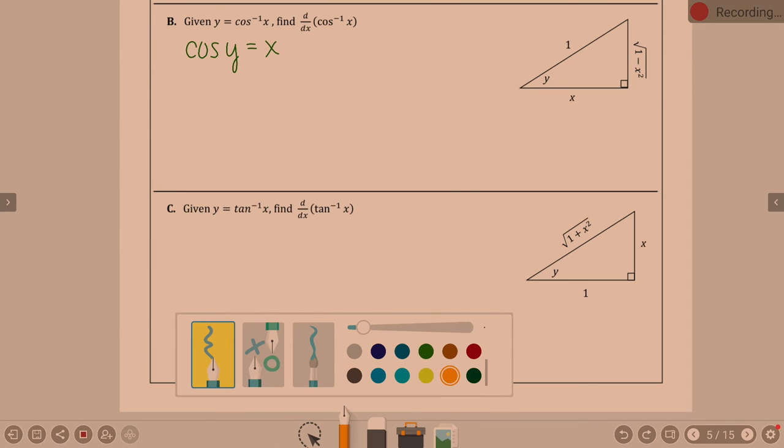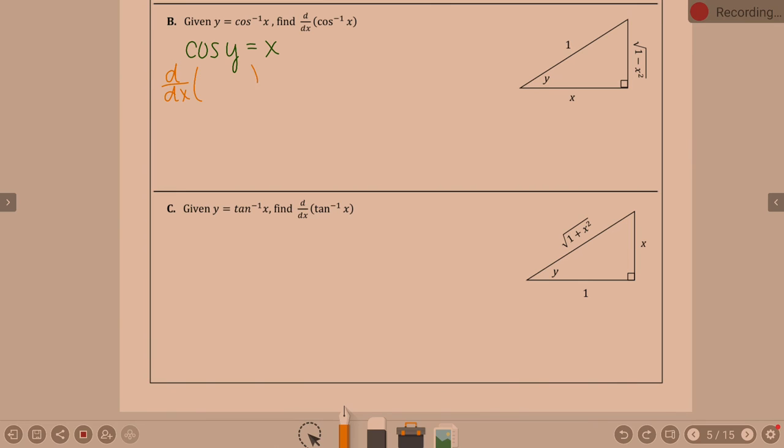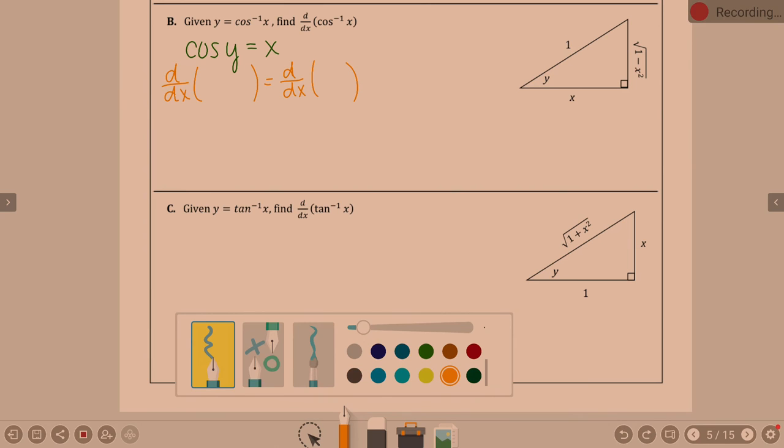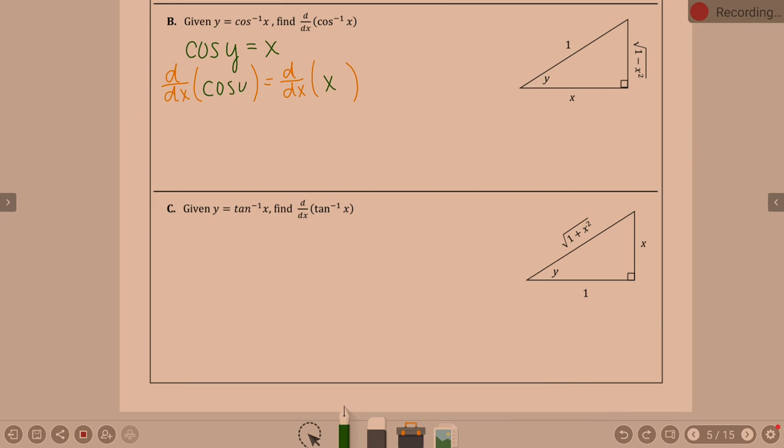We're going to take the derivative here of both sides. We're going to do the derivative of cosine y, and we're going to do the derivative of x. What is the derivative of cosine of something? Negative sine of something times the derivative of something. Well, the derivative of y is just 1, but then times dy dx. Derivative of x is 1. Solve that. And I have dy dx is going to be 1 divided by negative sine of y.